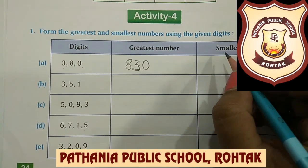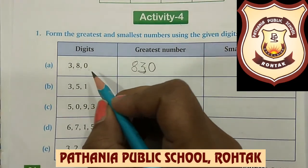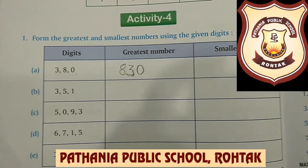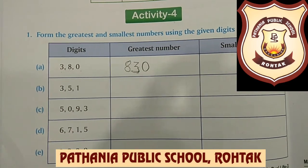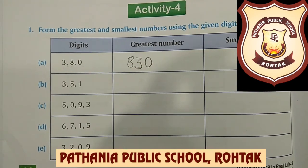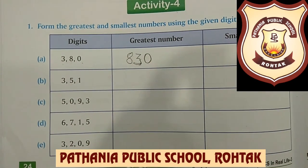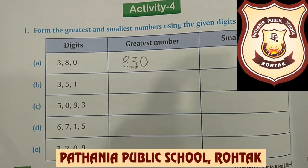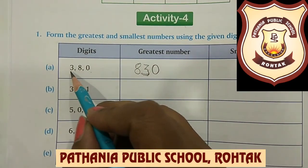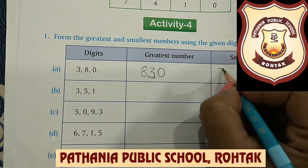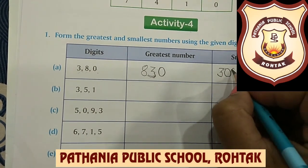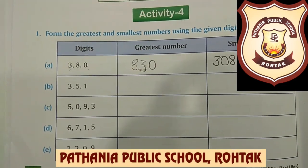Now how will we form the smallest number with these digits? The smallest digit is 0. But 0 doesn't have its own value, so we can't start a number with 0. When framing the smallest number, 0 comes at the second place. So after 0, the next smallest digit is 3. We write 3 first, then 0, then 8. So 308 is the smallest number.